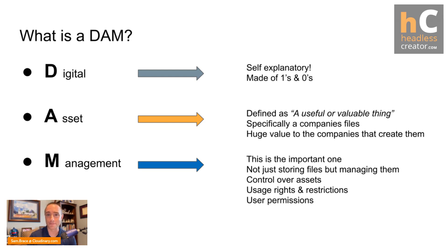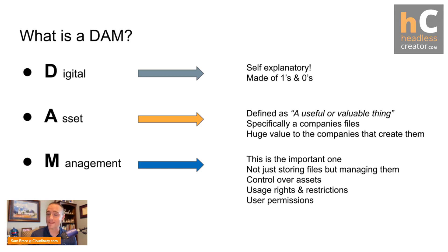A digital asset management system is commonly referred to by the acronym DAM. 'Digital' means everything is comprised of digital content — as simple as ones and zeros — including images, videos, audio files, and templates. 'Asset' refers to anything of value: that homepage header image is a valuable asset, as is that video getting lots of attention on YouTube and other streaming platforms.